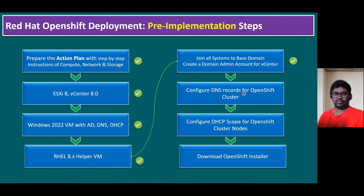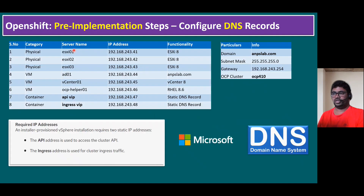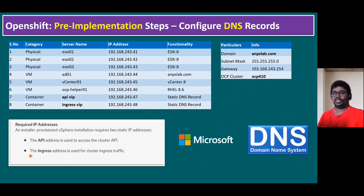Before we deploy the OpenShift cluster, DNS records play a key role. As part of the DNS record creation, we should create DNS records for our ESXi hosts, Active Directory, vCenter server, and the OCP helper VM. There are two important static DNS records: the API VIP and the ingress VIP. I've dedicated two IP addresses for these two records. As per the official Red Hat OpenShift documentation, the installer-provisioned vSphere installation requires two static IP addresses. The API IP address is used for accessing the cluster API (application program interface), and the ingress address is used for cluster ingress traffic.